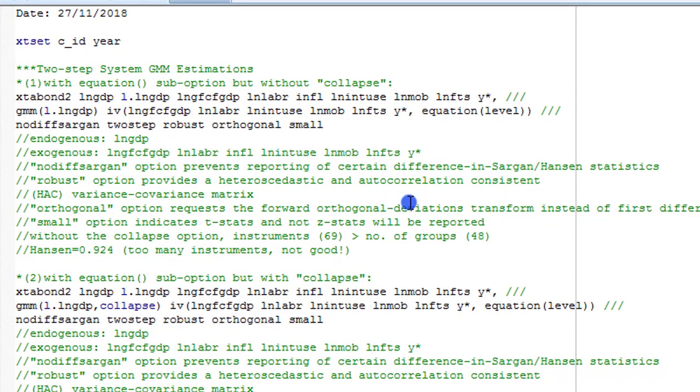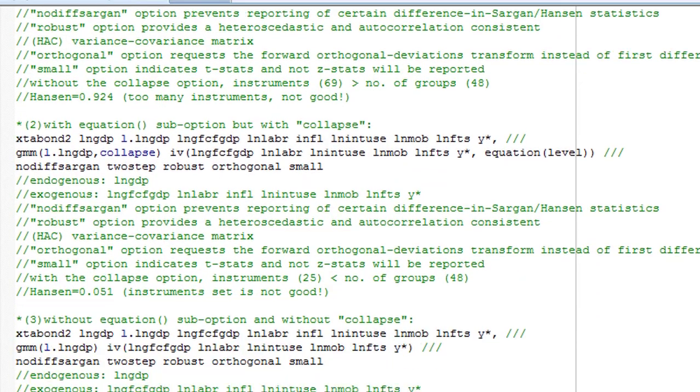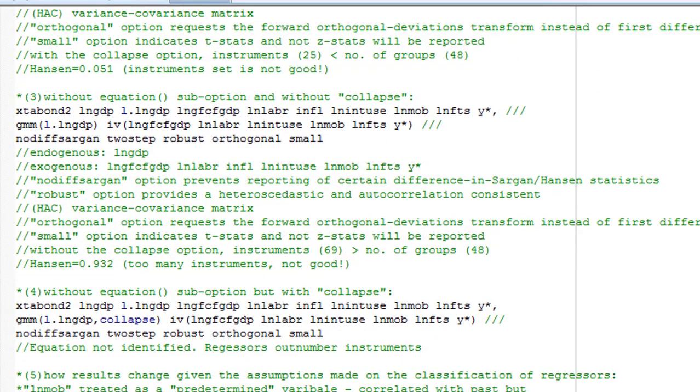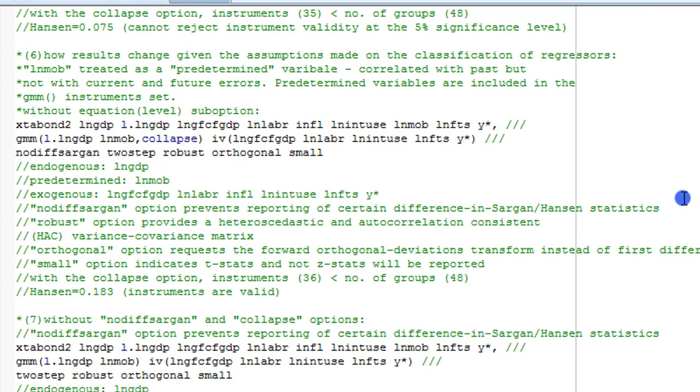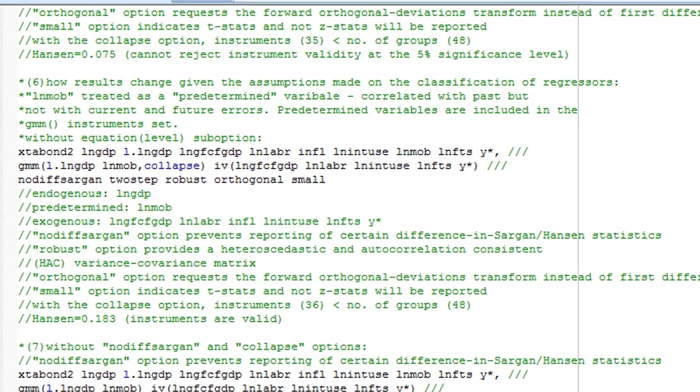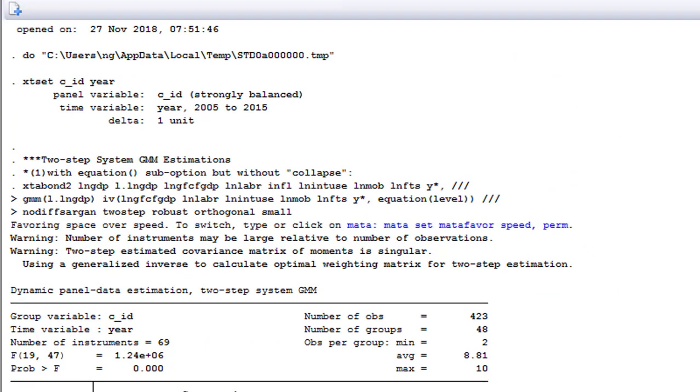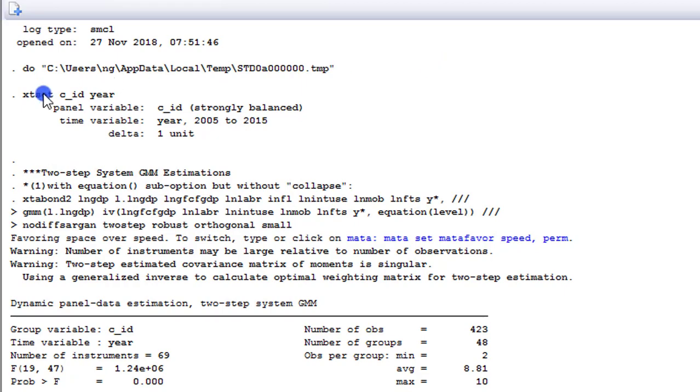Here is the do file, which will be available for you on my website. I have written here all the codes I'll be executing, even though I've already executed them. But these are the codes that we are using for the two-step system GMM. Like I mentioned, I have executed all the commands. So I'll be using the log file to explain all my analysis.